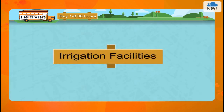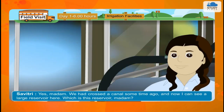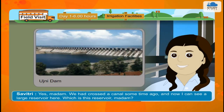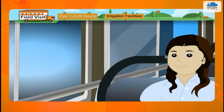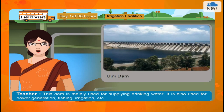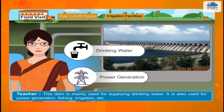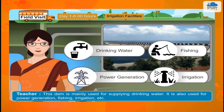Irrigation Facilities. Savitri: Yes, madam. We had crossed a canal some time ago and now I can see a large reservoir here. Which is this reservoir, madam? Teacher: Refer to your maps. As shown, to our right are the backwaters of the Ujini Dam built on the river Bhima. This dam is mainly used for supplying drinking water. It is also used for power generation, fishing, irrigation, etc.